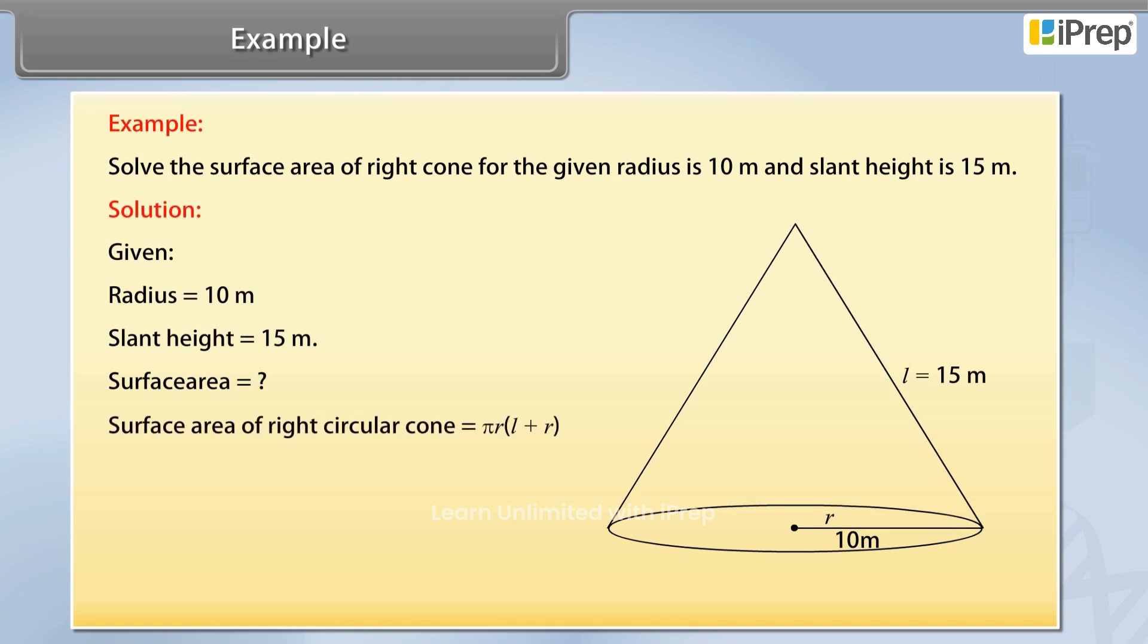We know that surface area of right circular cone is equal to πR(L + R). Therefore, by substituting the values we get, surface area equals 3.14 × 10 × (10 + 15). By solving this we get, surface area is 785 square meter.